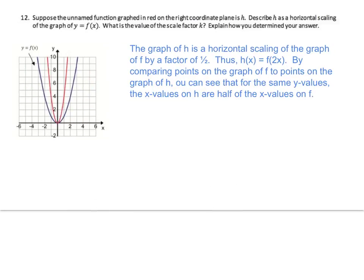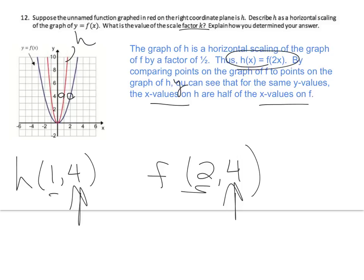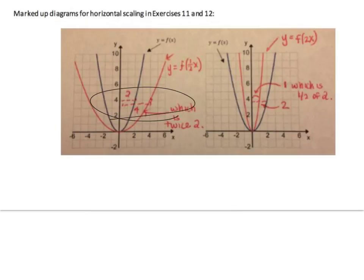Number 12: suppose the unnamed function graphed in red is h. Describe h as a horizontal scaling of y equals f(x). The graph of h is a horizontal scaling of f by a factor of one half. h(x) equals f(2x). For the same y-values, the x-values on h are half the x-values on f. On h, the point is (1, 4); on f, it's (2, 4) — so the x-value is half.